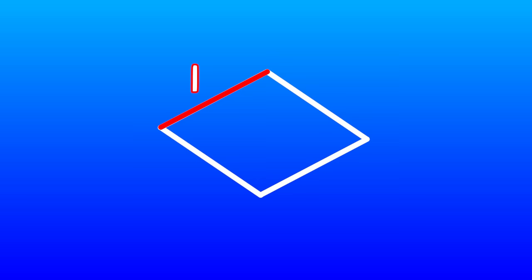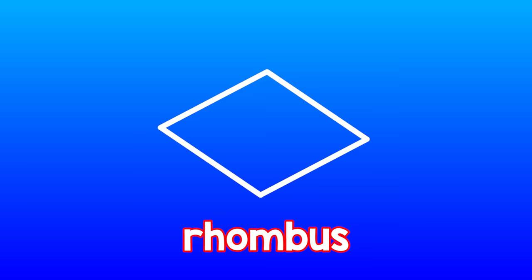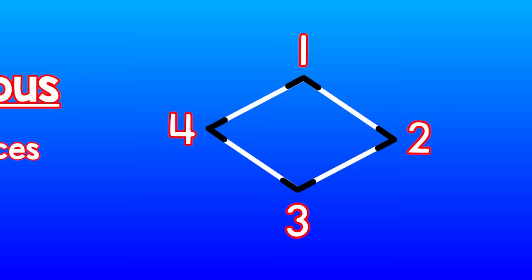This is a rhombus. Let's move and count the sides of a rhombus. 1, 2, 3, 4. A rhombus has 4 sides. Let's move and count the vertices of a rhombus. 1, 2, 3, 4. A rhombus has 4 vertices and 4 sides.